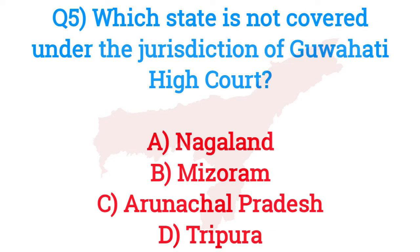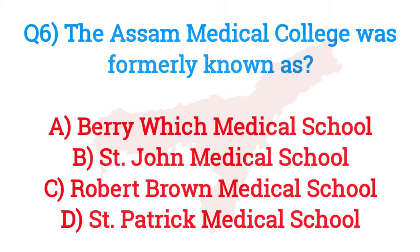Question number five: Which state is not covered under the jurisdiction of Gauhati High Court? The answer is option D — Tripura. Question number six: The Assam Medical College was formerly known as? The answer is option A — Berry White Medical School.